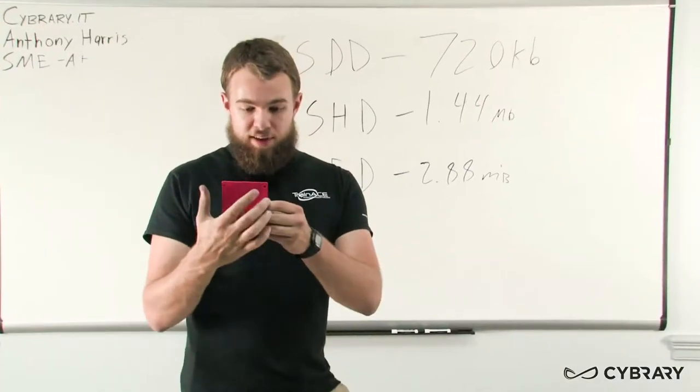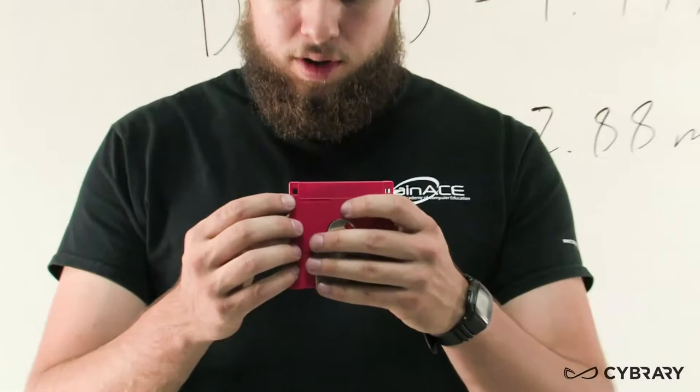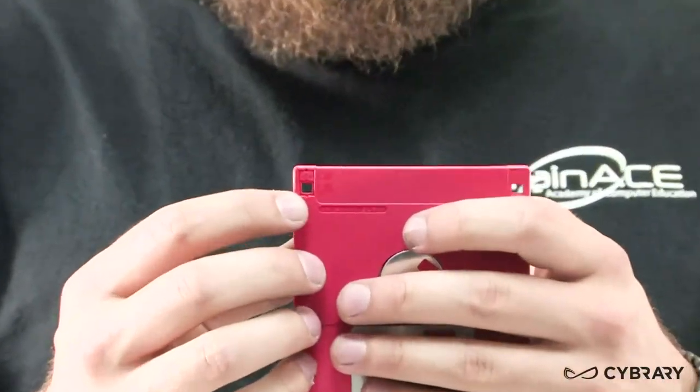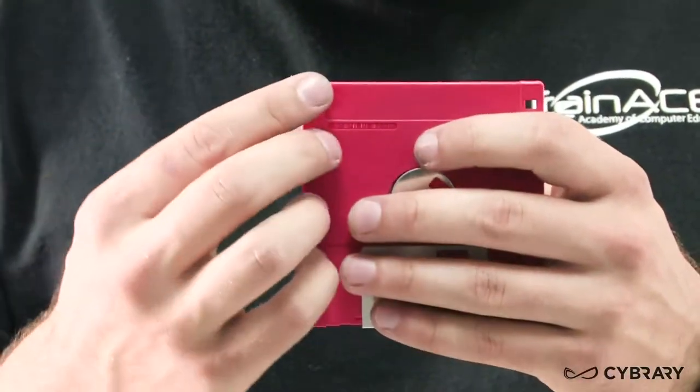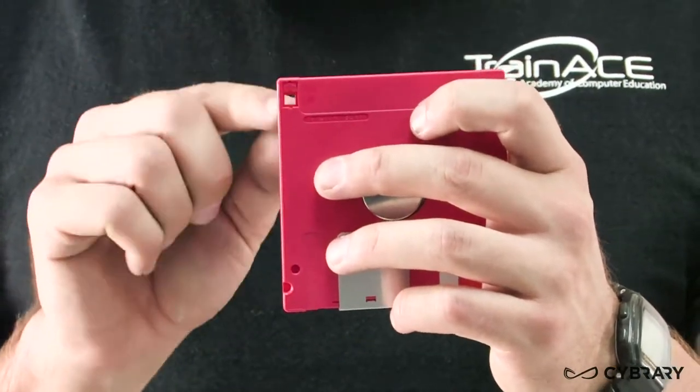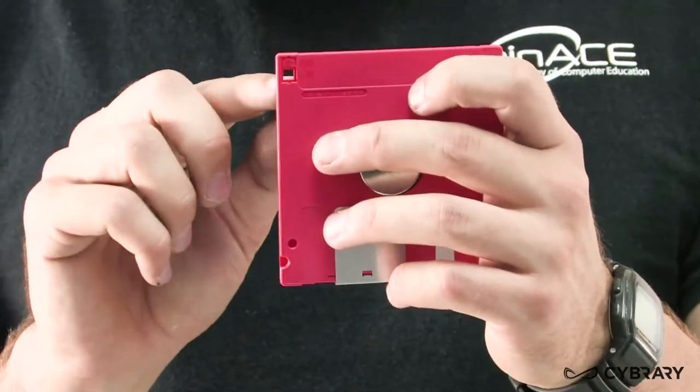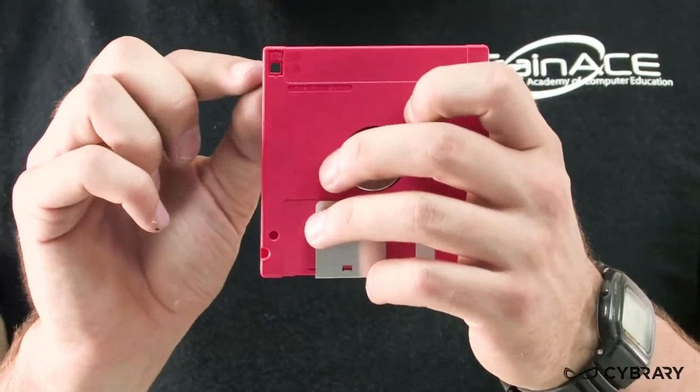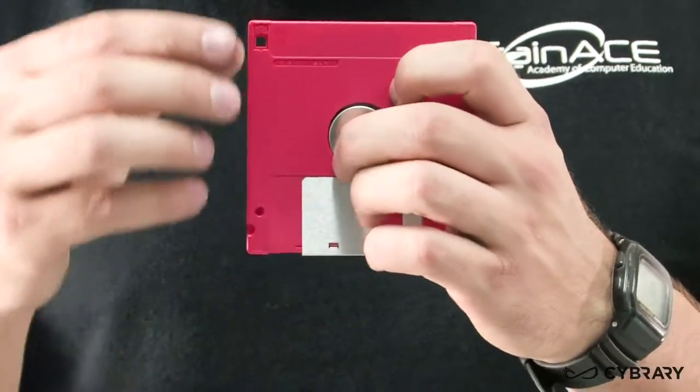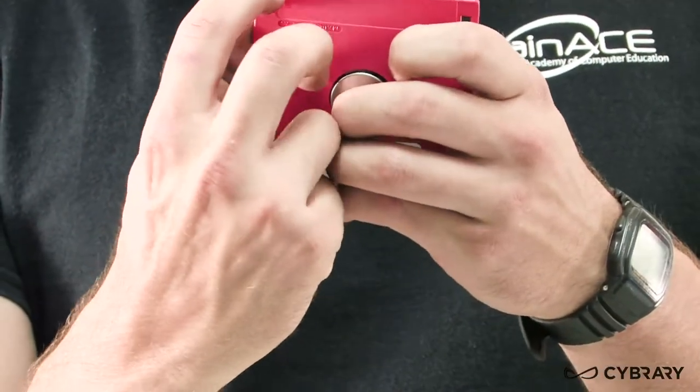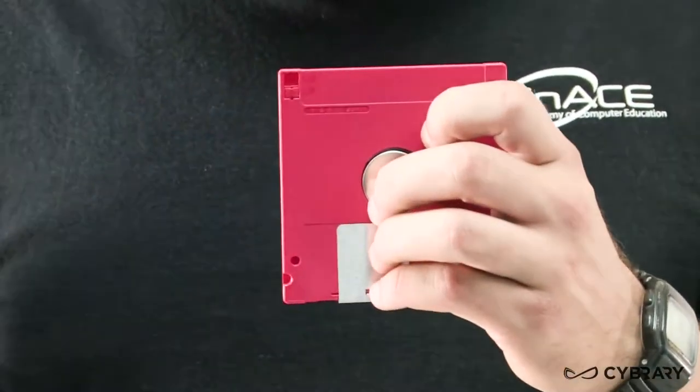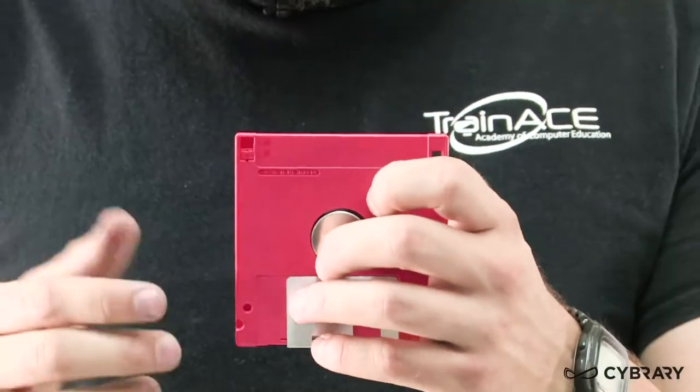We also have write protection, which is our small hole that we'll see in the upper right of our floppy drive when we're looking at it from the front. When we have the hole open, it's protected. This tells our computer not to write anything to our floppy disk. When we close the hole, then it's unprotected. Then we can write to that disk.